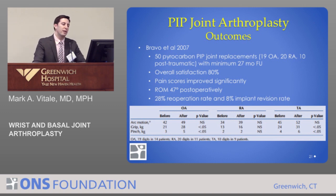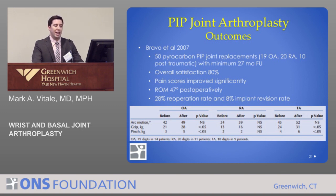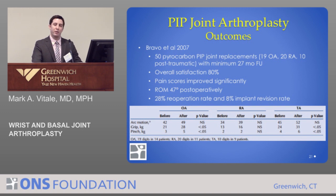Bravo, Dr. Rizzo, and colleagues at the Mayo Clinic in 2007 reported early results of the pyrocarbon PIP joint replacement. In 50 pyrocarbon PIP joint replacements with a minimum of 27 months follow-up, satisfaction was fairly high — four out of five patients were satisfied and pain scores improved. However, range of motion was not improved post-operatively, though it was preserved. There was a 28% reoperation rate and an 8% implant revision rate.